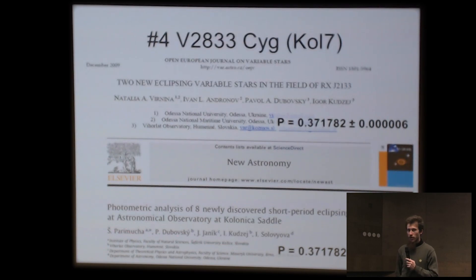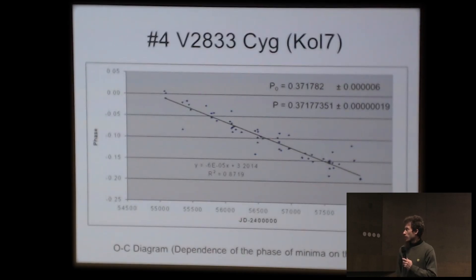The second paper was by Stefan Parimucha and co-authors. They conducted modeling of this system and many systems and got some values. But according to our data, that initial period is a bit incorrect. So again we may correct it using O-C analysis. Here is the value of the corrected period. This is the initial value.